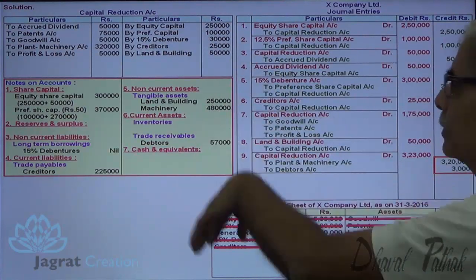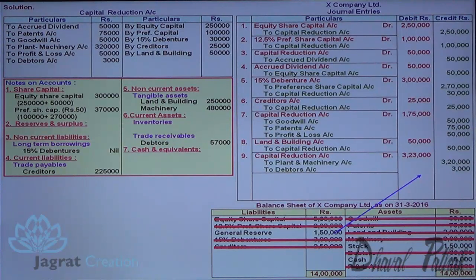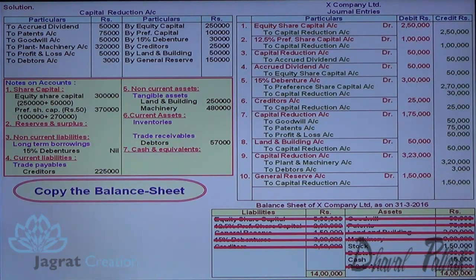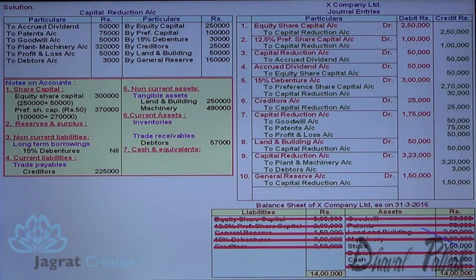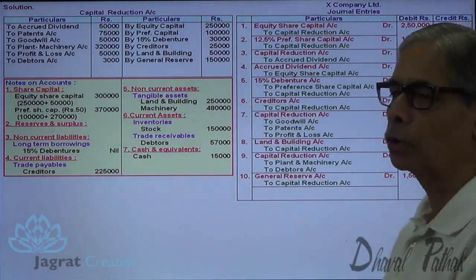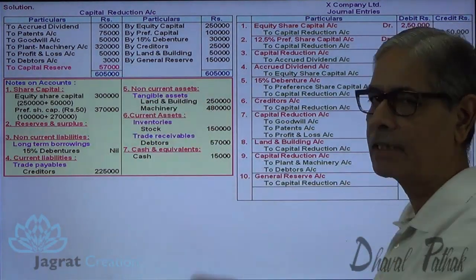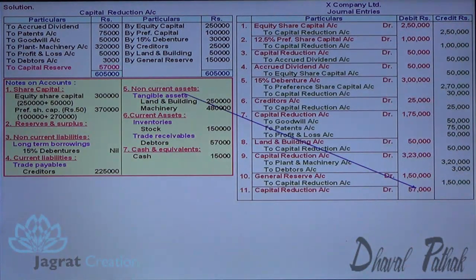General reserve will be transferred to capital reduction: General Reserve Account debit, to Capital Reduction Account credit. Remaining items are copied to the balance sheet — stock of Rs. 1 lakh 50,000 appears in inventories; cash and bank balance appears under cash and cash equivalents. The capital reduction account is now closed: total credits minus total debits leaves Rs. 57,000 transferred to capital reserve. Journal entry: Capital Reduction Account debit, to Capital Reserve Account credit Rs. 57,000. This capital reserve will appear in reserves and surplus.